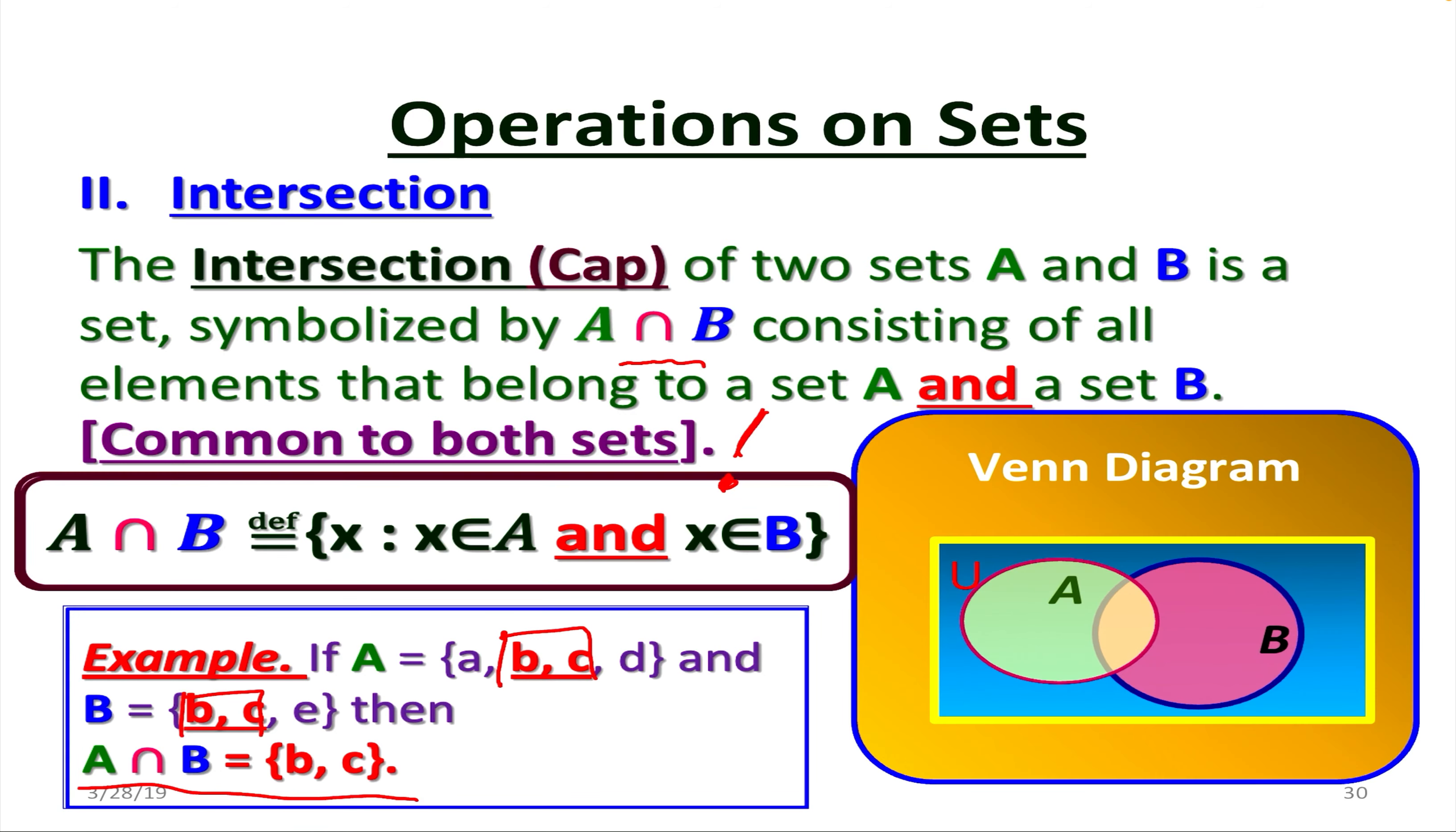And by definition, A intersect B is going to be all x such that x is in A and x belongs to B. When it comes to Venn diagram, the overlapping part of these two sets is going to be the intersection.